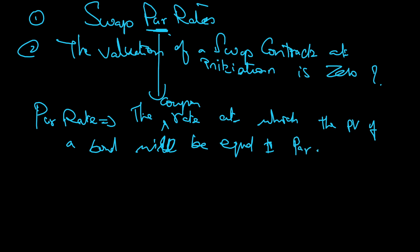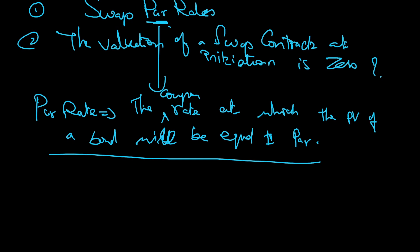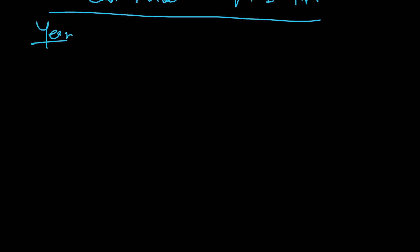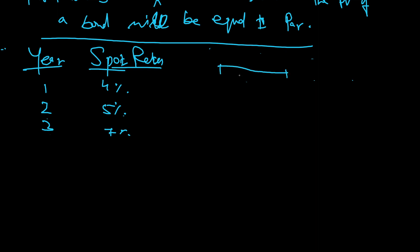...you can consider par rate as the coupon rate at which the present value of your bond will be equal to par. I will be deriving all these statements. So let's take one example. Year and spot rates: the one-year spot rate is four percent. Spot rate means the yield that you get when you hold the bond till maturity.